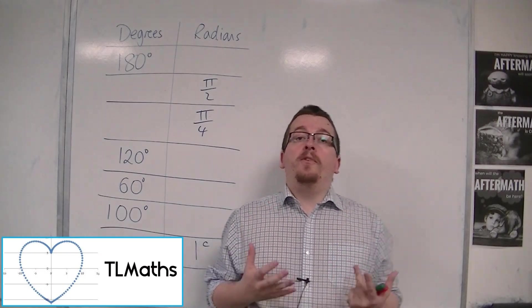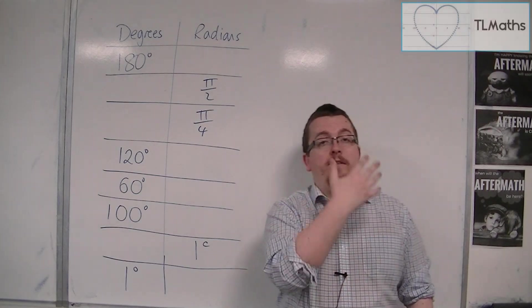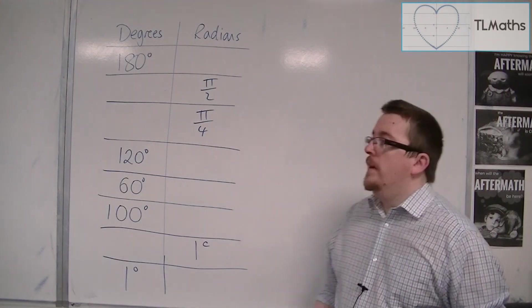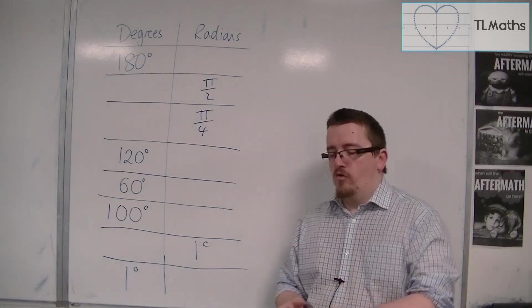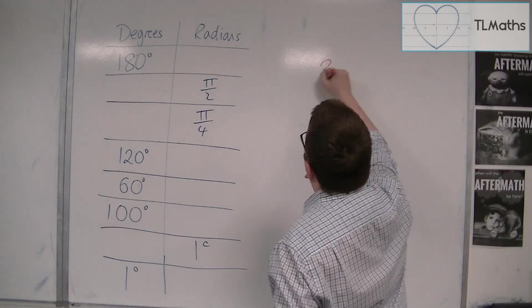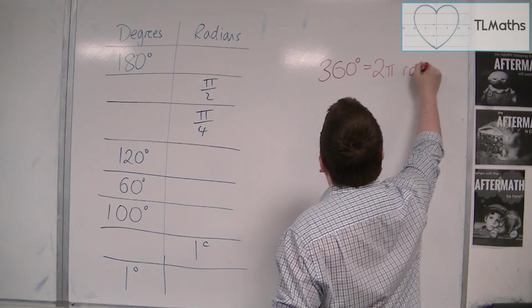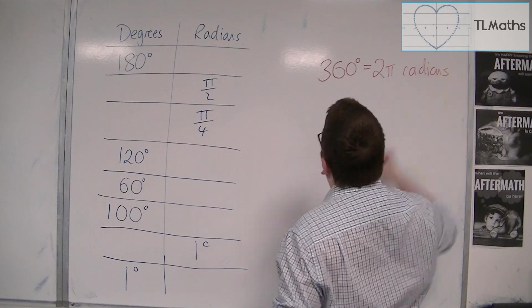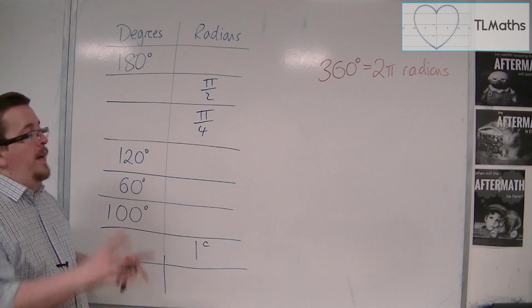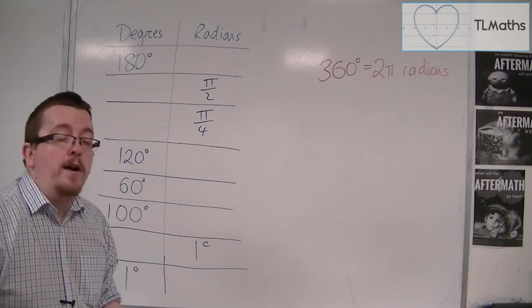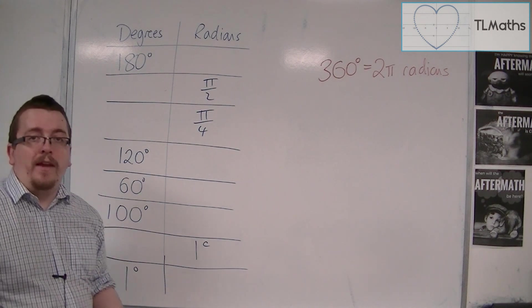In this video, I want to show you some examples of converting between degrees and radians, and radians to degrees. The one conversion that you really must memorize is that 360 degrees is equal to 2 pi radians. That is the conversion that you must make sure you remember. And from that, you're able to work out any number of degrees as radians, or any number of radians as degrees.